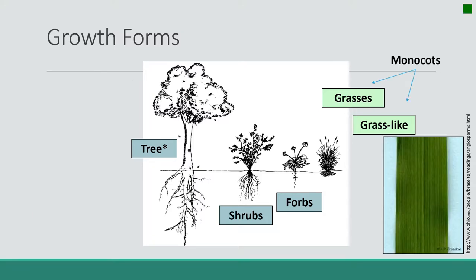Our grasses and our grasslikes make up our monocots. Monocots tend to have a long and narrow leaf blade with parallel venation. So you can imagine a grass leaf — they're very long, not very wide, and if you look real closely you can see that the veins are all parallel, one next to the other in a very uniform fashion.